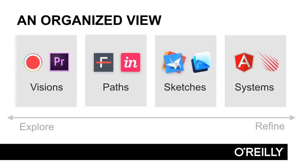In general, tools on the left side of the spectrum are best applied to early explorations — they allow designers to move quickly and test many ideas. Tools on the right side, meanwhile, are better suited for later-stage refinement. They allow designers to move with precision and get one thing exactly correct.